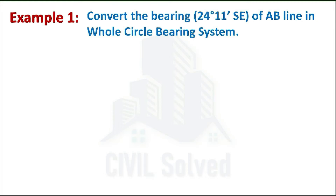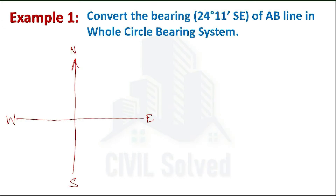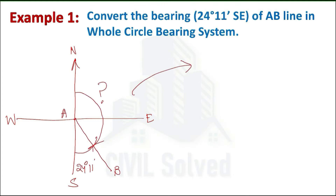We are asked to convert it into the whole circle bearing system. Let's draw the sketch first. We know the standard directions. Since the line is in the southeast quadrant and the bearing is 24 degrees 11 minutes, the line is drawn in the southeast quadrant. This angle is taken from south, so the line is somewhere in that direction, with the given angle of 24 degrees 11 minutes.